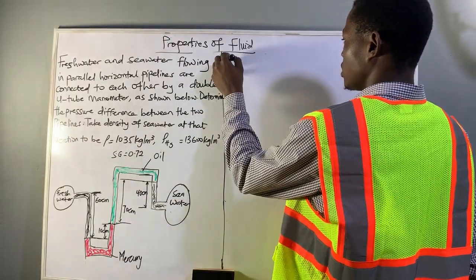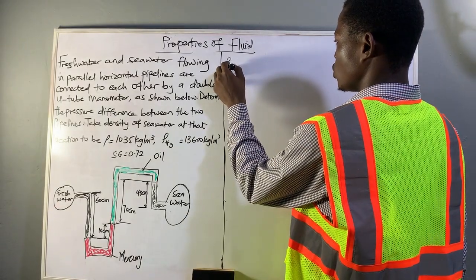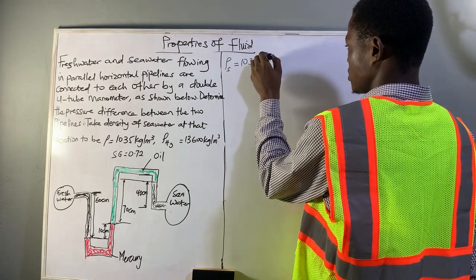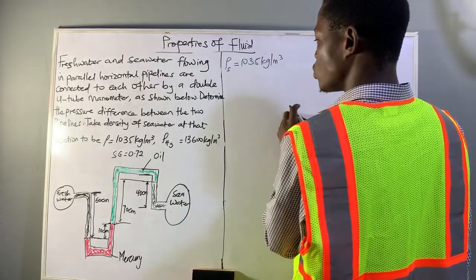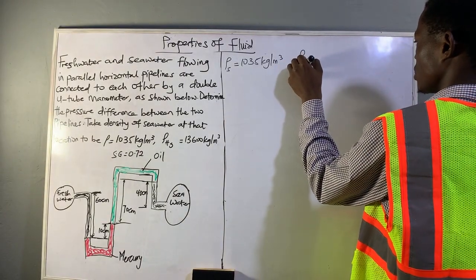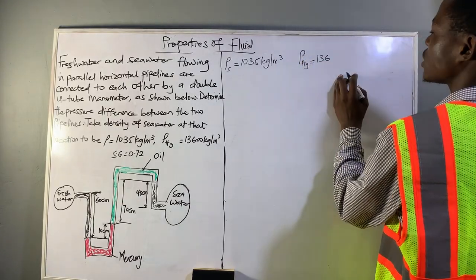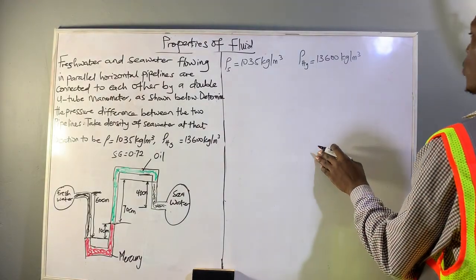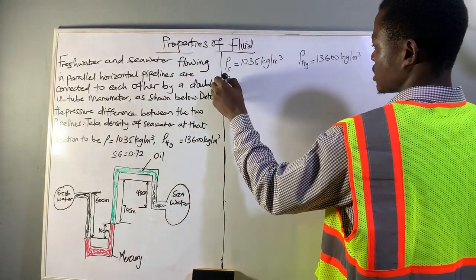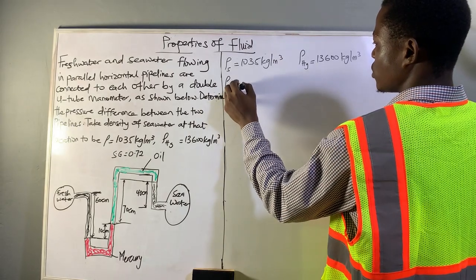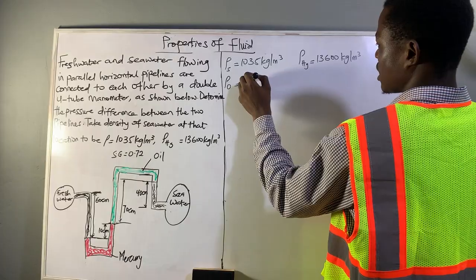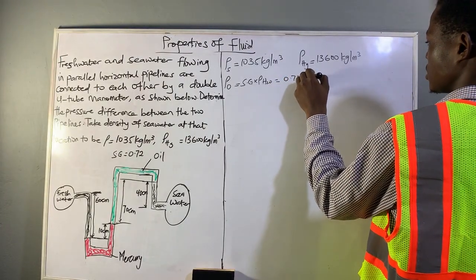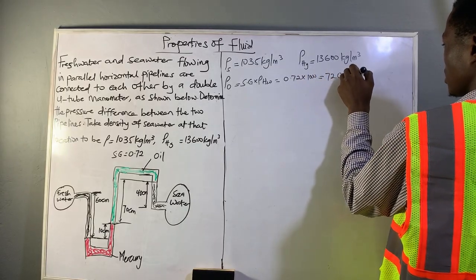We have been given the density of seawater, denoted rho_S, equal to 1025 kilogram per meter cube. We also know rho_Hg equals 13,600 kilogram per meter cube. We also have the specific gravity of oil, from which we can calculate the density: rho_oil equals SG times rho_water, which is 0.72 times 1000, giving us 720 kilogram per meter cube.